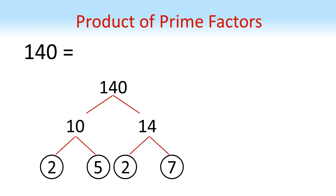14 is equal to 2 times 7. Again, they're both prime, so if we circle them, we've now got to the bottom of our factor tree. We've got a 2, a 5, another 2 and a 7. So 140 is equal to 2 times 2 times 5 times 7.